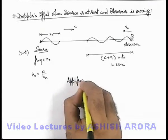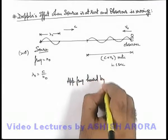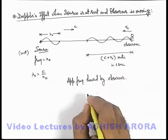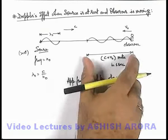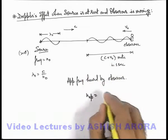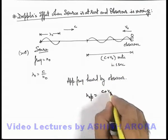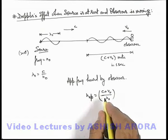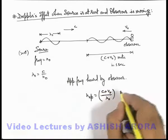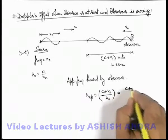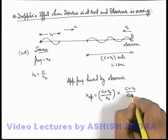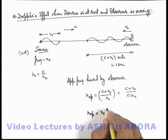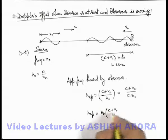So we can say apparent frequency heard by observer can be given as n_apparent. Frequency can be given as n₀ times (c plus v₀) by c.